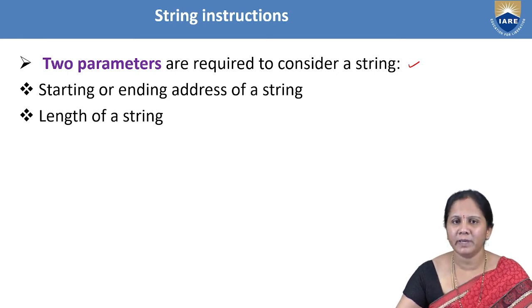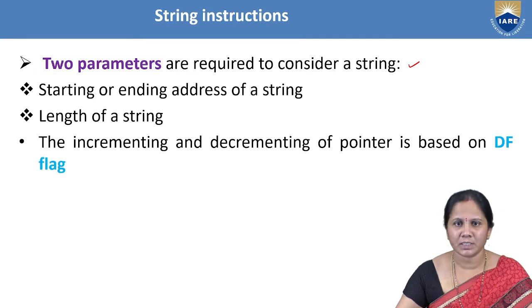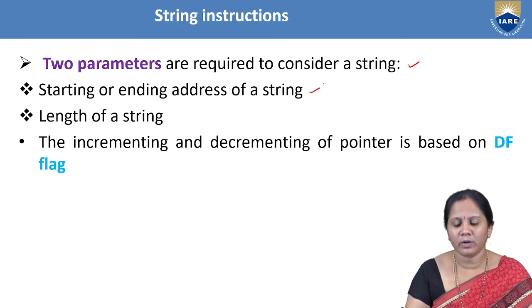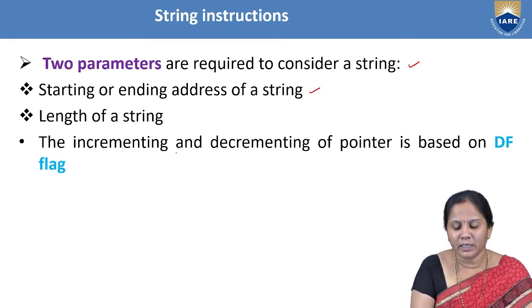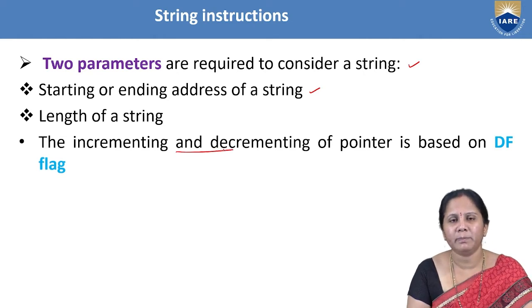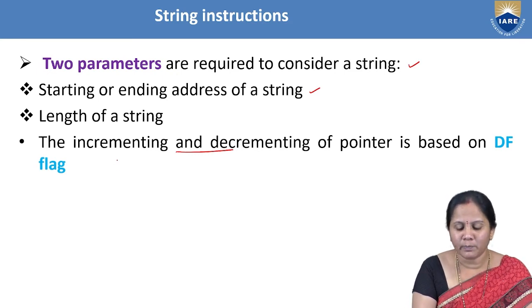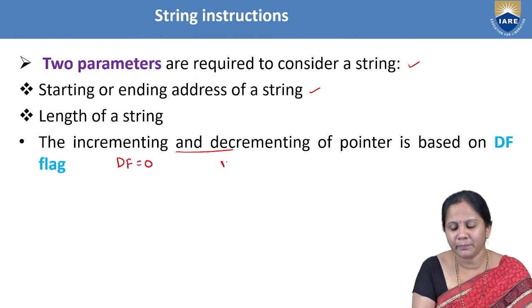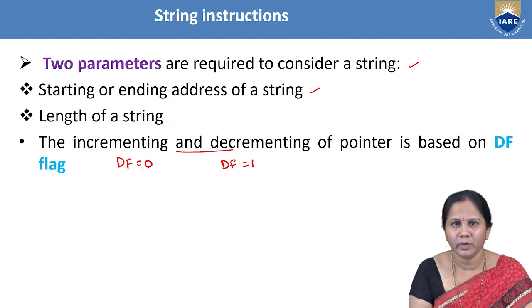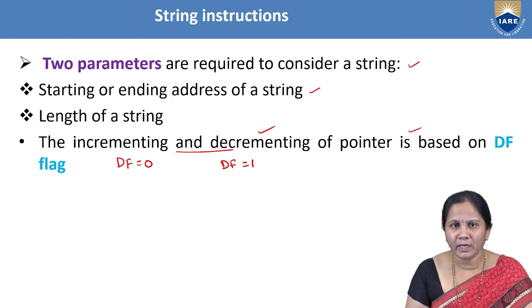The length of the string is generally considered with the help of the CX register, which is a 16-bit counter register. The incrementing and decrementing of the pointer is dependent on the direction flag (DF). If DF is equal to zero (CLD — clear direction flag), it operates in auto-increment mode. If DF is equal to one (STD — set direction flag), the processor enters auto-decrement mode.